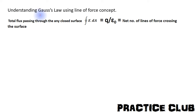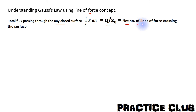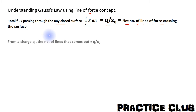We will understand Gauss's Law using the concept of lines of force. We have discussed that the total flux through any closed surface — the integral of E·dA — is equal to q by epsilon, and it is also equal to the net number of lines of force crossing the surface. Using the concept of lines of force, Gauss's Law becomes very obvious, as discussed in the previous lecture on lines of force.